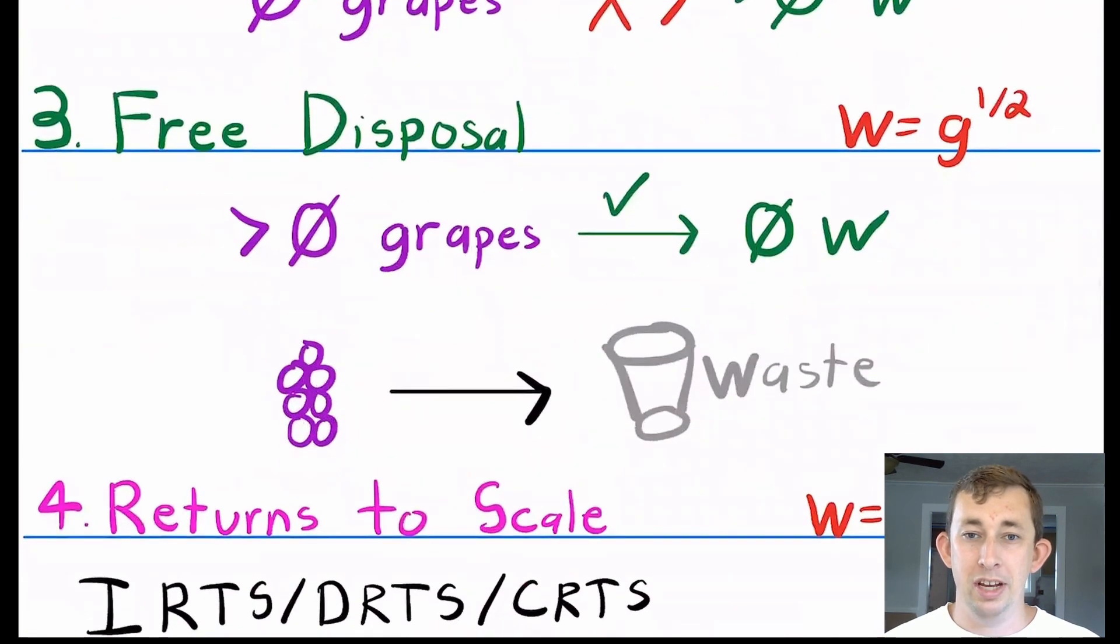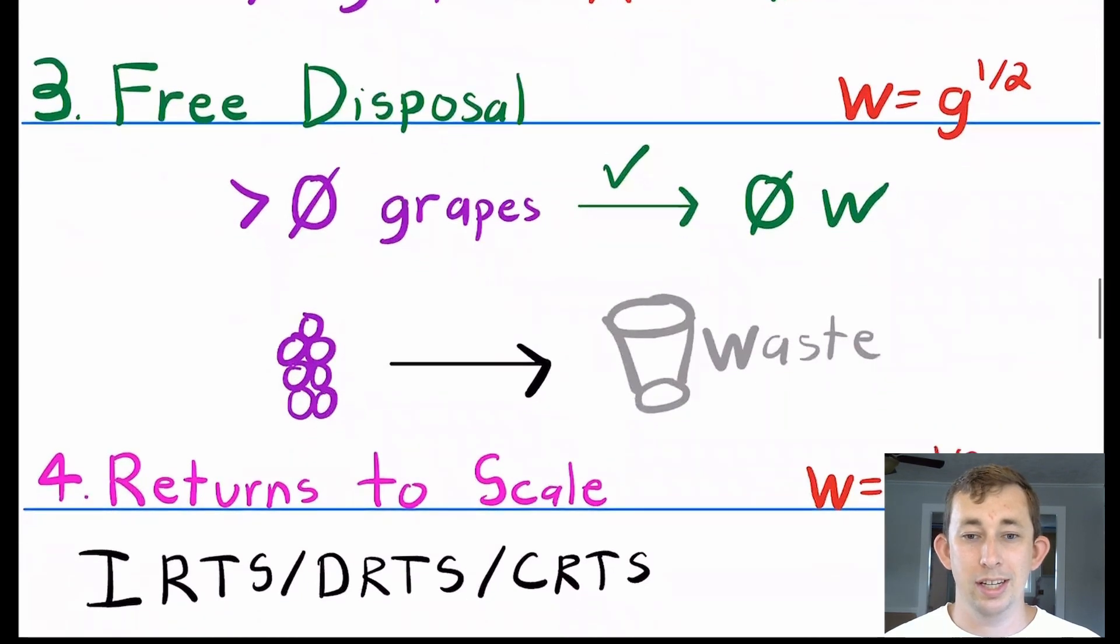Free disposal is the third property of production function. That just means that your trash can is available to you. So if you wanted, you could put some number of grapes into the machine, you might get some W out, but you throw that W right into the trash. And so you make zero output. That's what free disposal means. You can throw things straight into the garbage. You can also throw your grapes directly into the garbage and not make anything at all.